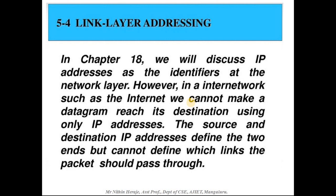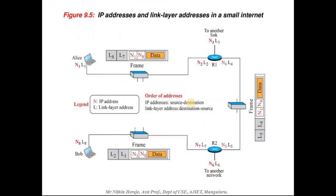Now, link layer addressing. Looking at a frame being sent from Alice to Bob, the datagram from N1 to data is received from the network layer. N1 is the source IP address and N8 is the destination IP address for Bob. The frame also contains link layer addresses — L1 as the source and L2 as the destination link address.